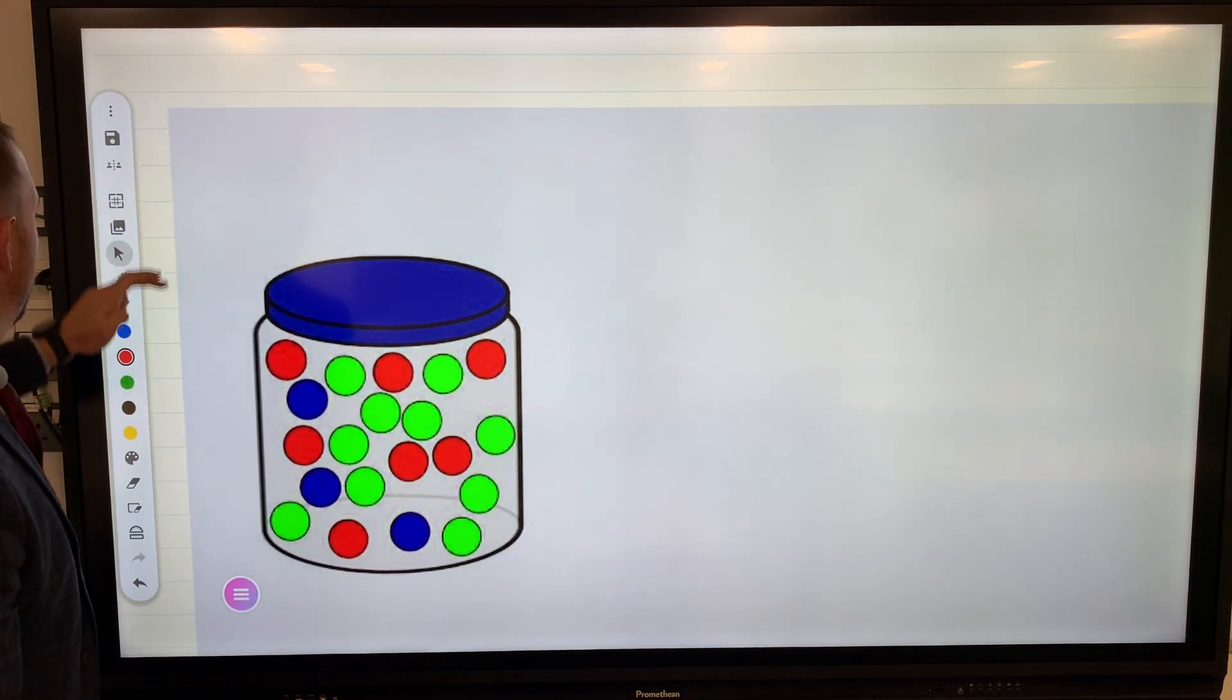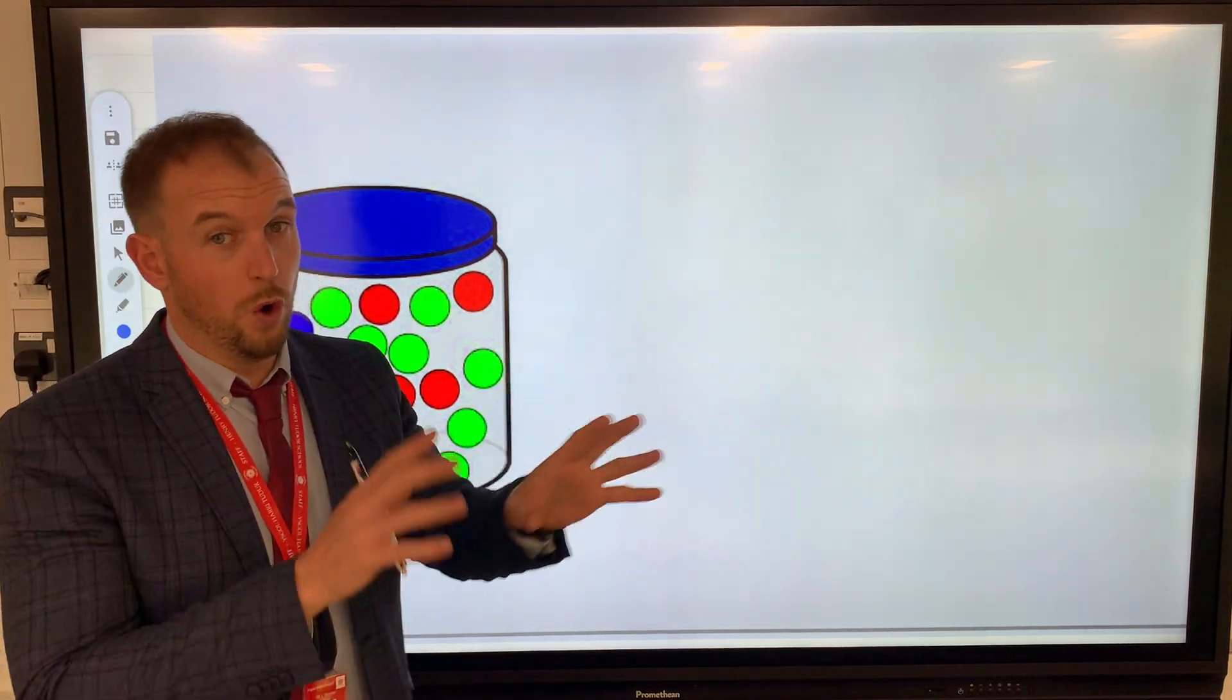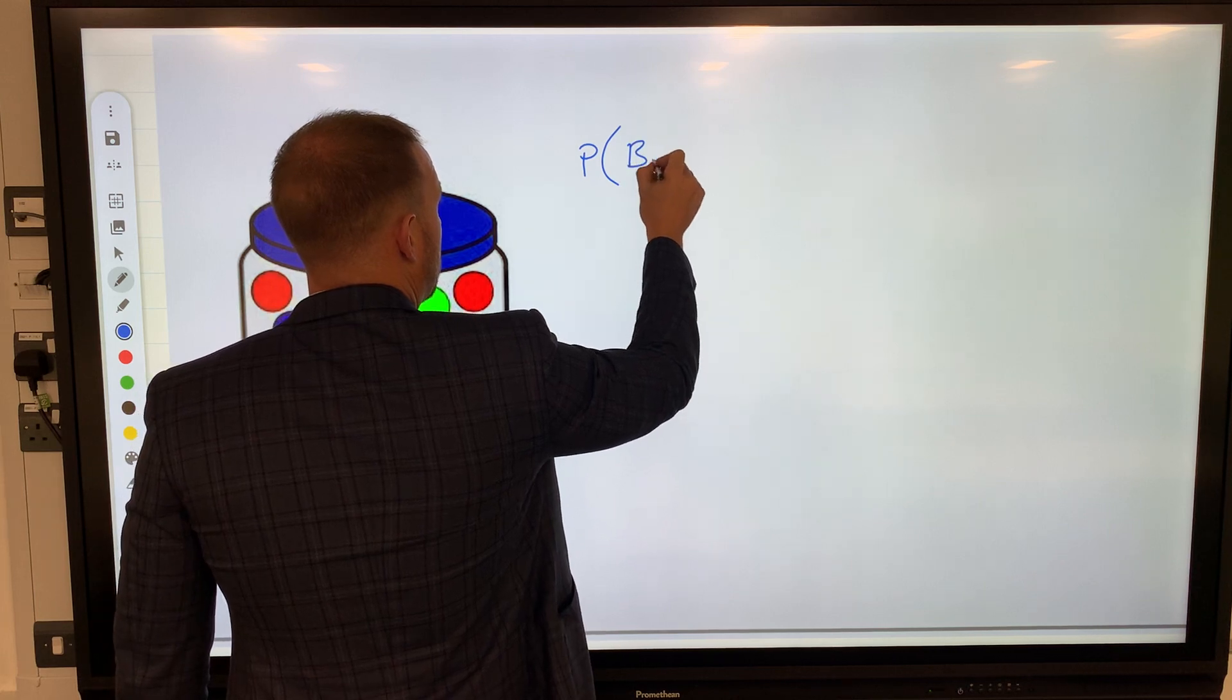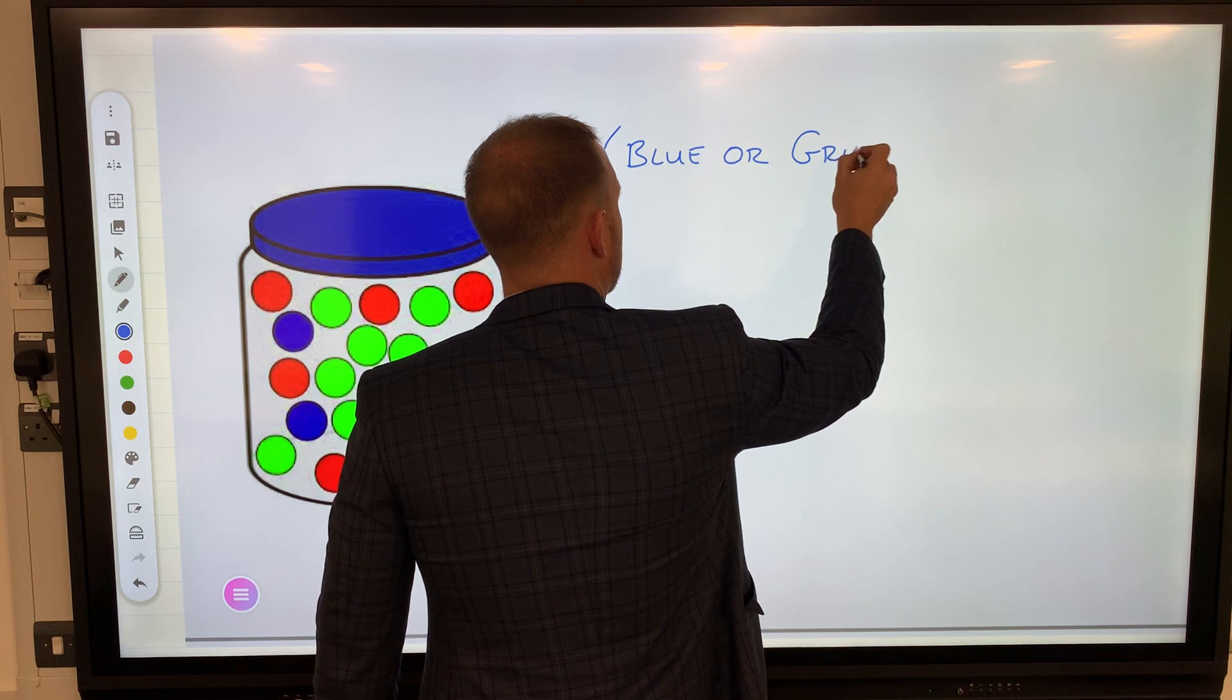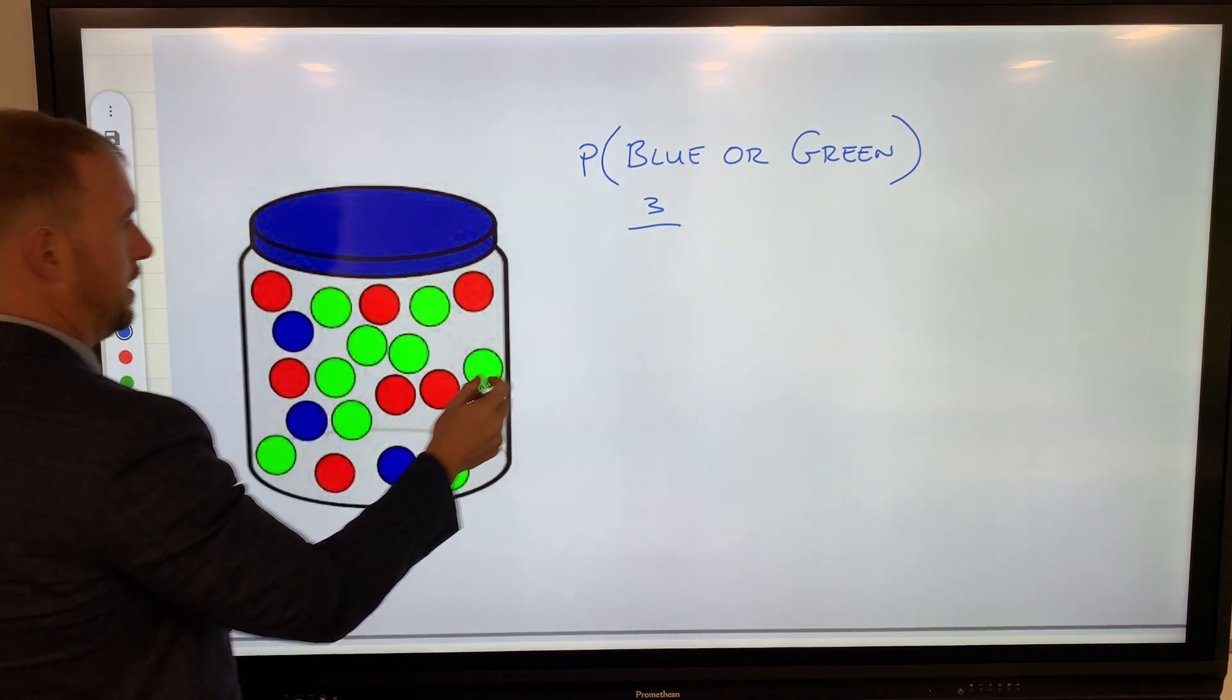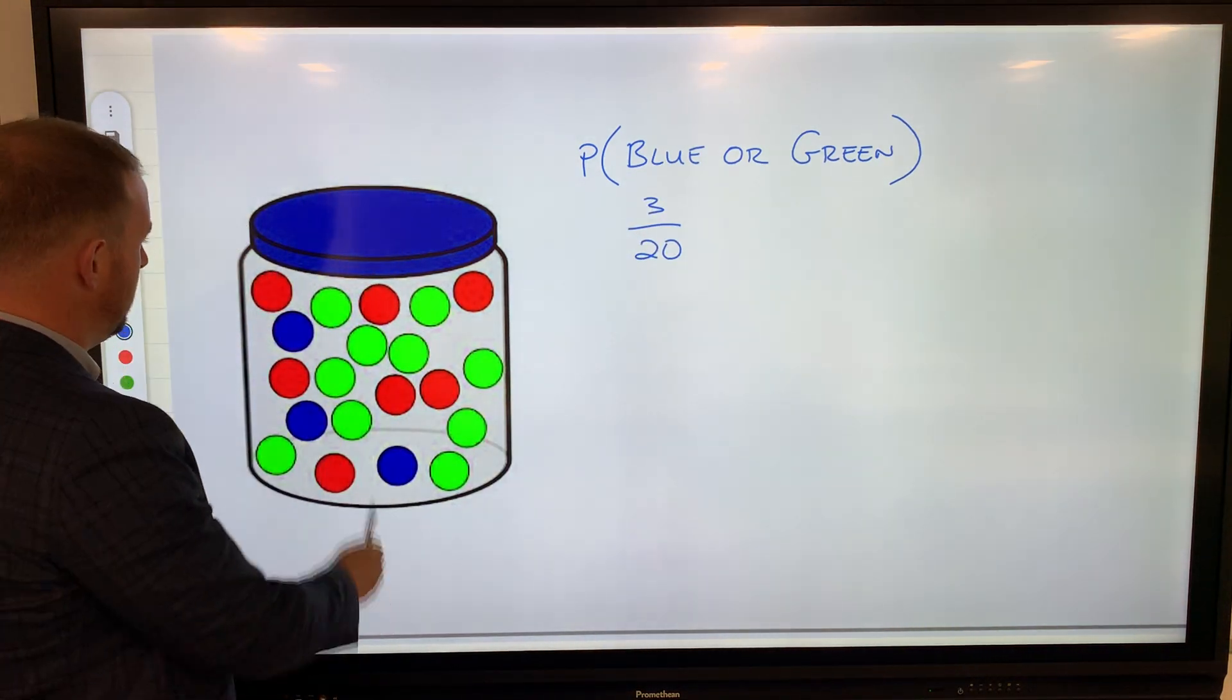You've then got a jar of marbles—the standard probability style question. This is a good way to show what we do when there's an 'or' question. The probability of selecting blue or green: blue, I've got three out of—let's have a look—20. Three out of 20. Green, I've got 10 out of 20.